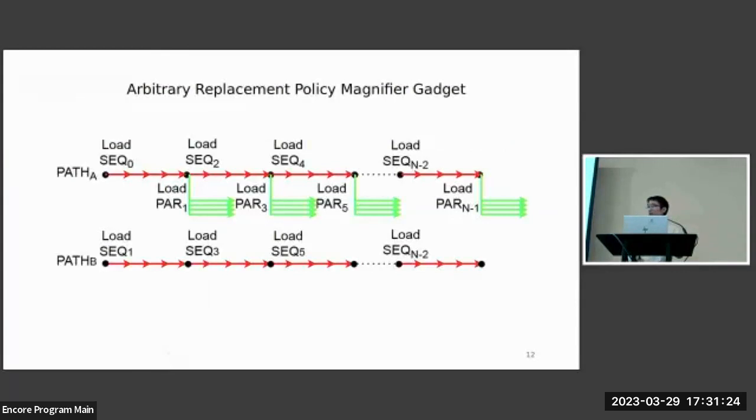In this diagram, those green arrows represent parallel access after each period of path A. They access the same set but not the same data as that in path B. Therefore, it will evict part of the data in path B's critical path, regardless of the specific replacement policy being used, as the cache set cannot insert one set of new data from this parallel access without evicting any of the old one.